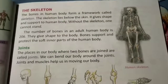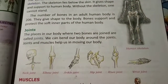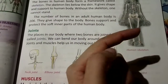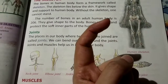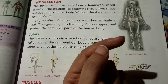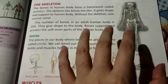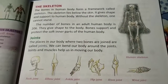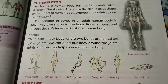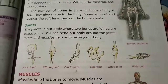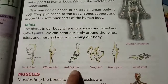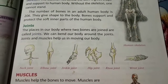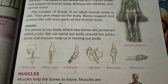Now we will learn about joints. The places in our body where two bones are joined are called joints. For example, we can bend our fingers because we have joints there. All the body parts that can bend have joints there — we can bend our body around the joints. Joints and muscles help us in moving our body. Some of the joints are the neck joint, elbow joint, ankle joint, hip joint, knee joint, and wrist joint. Joints make our body flexible and help us in moving.